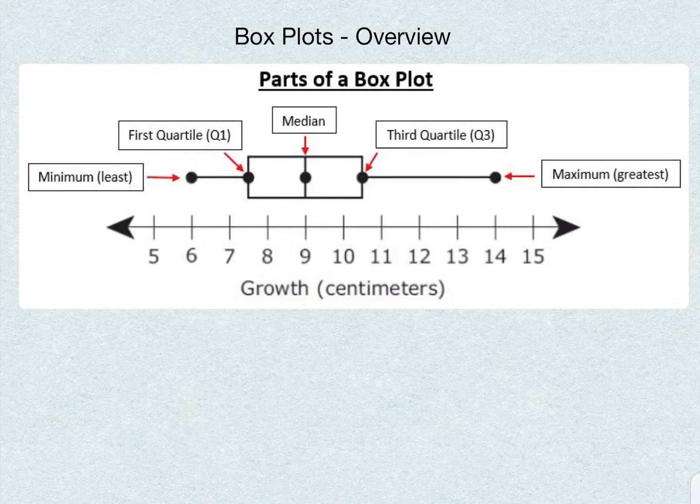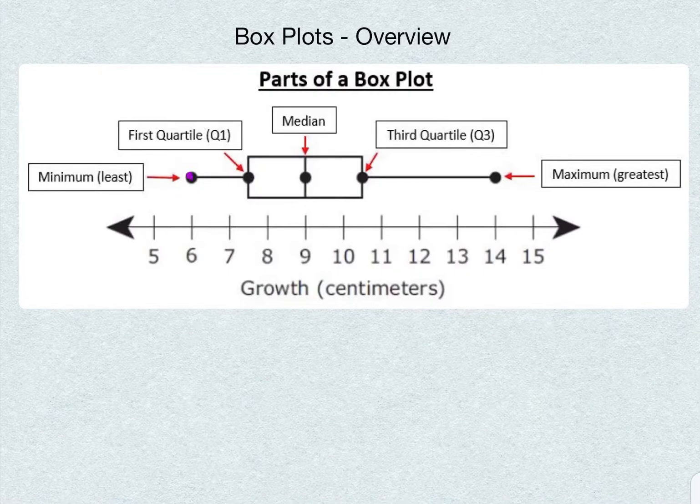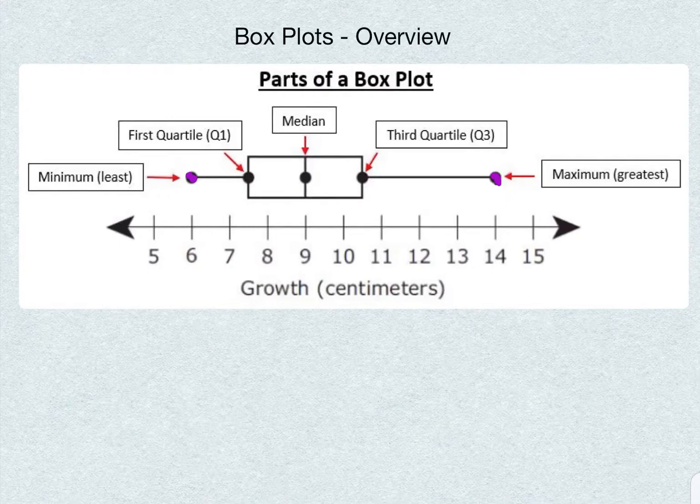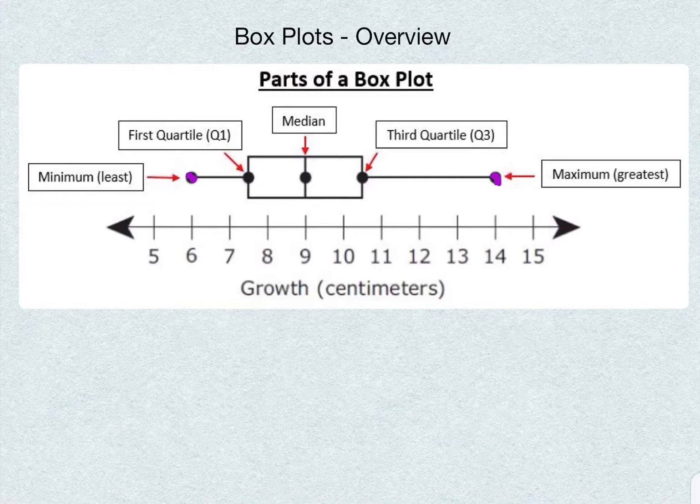Now let's start with the parts of a box plot. I have the label here with the arrows. Let's start on the left side where our minimum, our least, our smallest point is. And opposite of that, on the right side, we have our maximum, our greatest point. That's the beginning and end of our data.